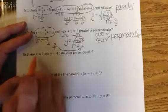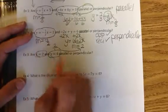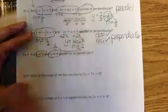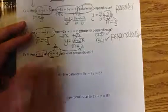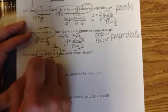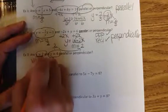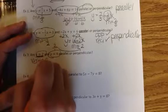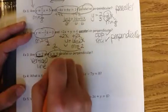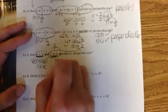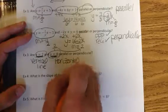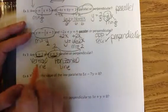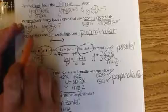Number 3: are x equals 2 and y equals 4 parallel or perpendicular? x equals 2 is a vertical line, and y equals 4 is a horizontal line. Every vertical line and every horizontal line together are perpendicular.